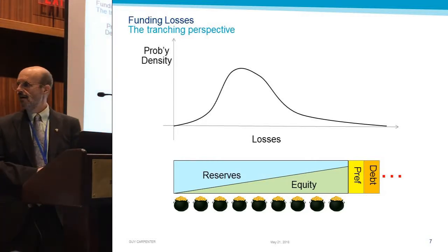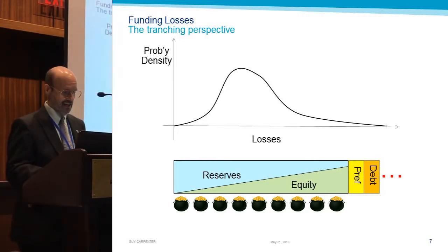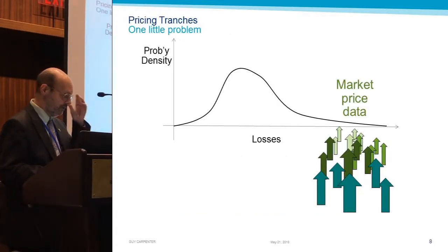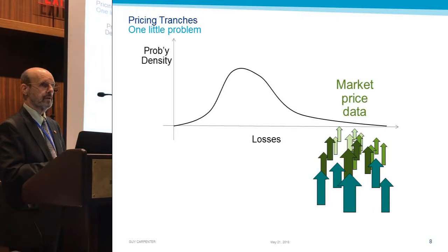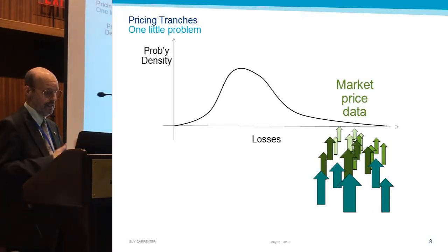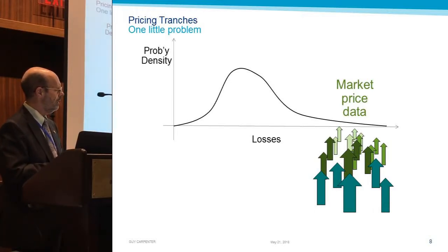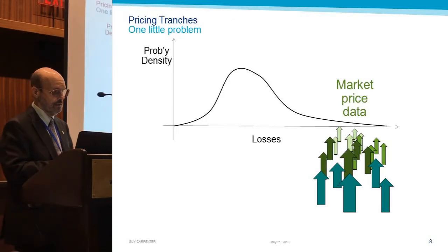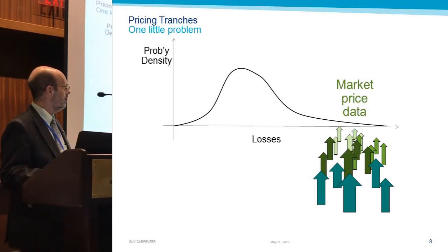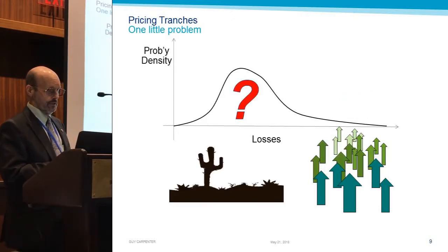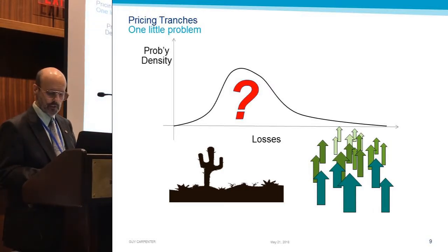So all we need is a distortion function. This is a good news, bad news situation. Good news is over on the right-hand tail we have lots of market price data — a lot of activity in the market for cat bonds, excess-of-loss reinsurance. Typically anything with an exceedance probability under 20%, or better, under 10%, you're going to find something out there that can make sense of it. The bad news is that for the rest of the distribution — the other 80-plus percent of the time — crickets. So what are we going to do about that?